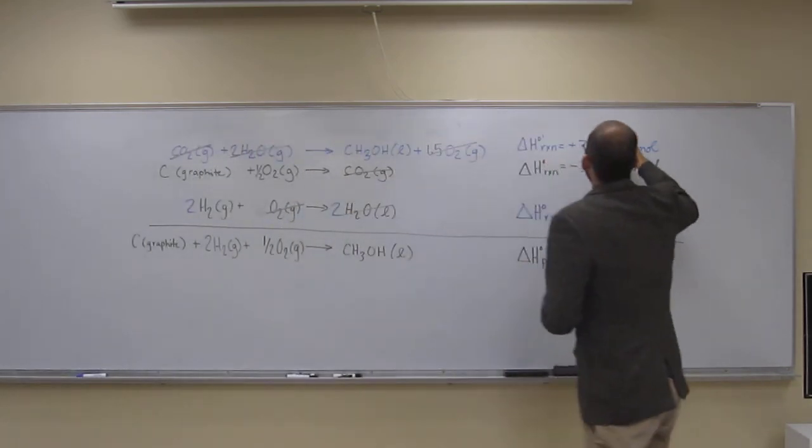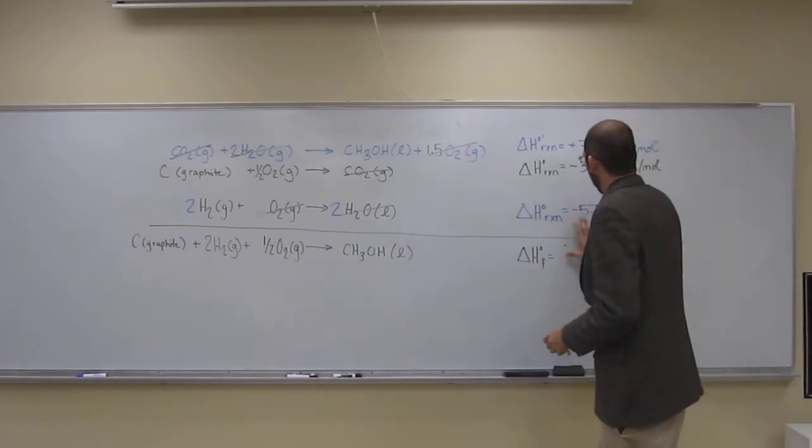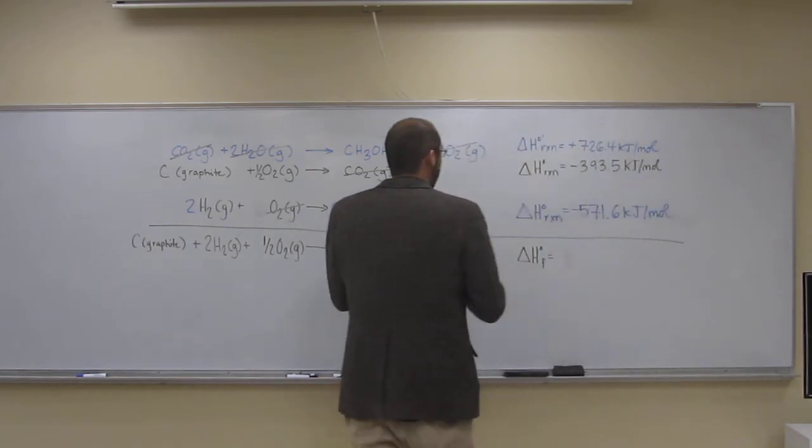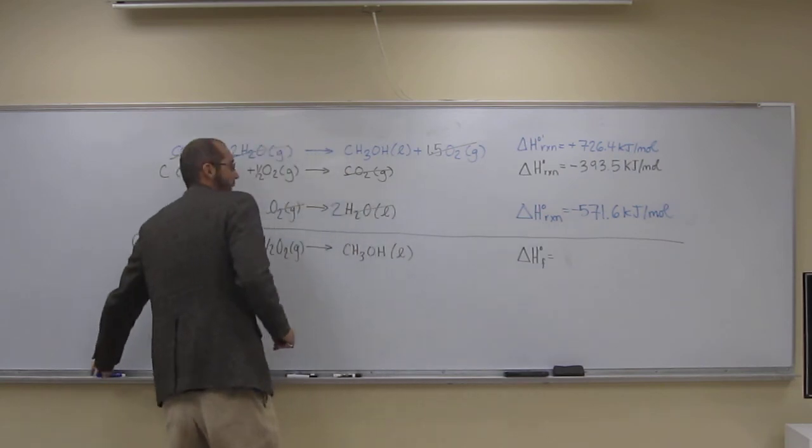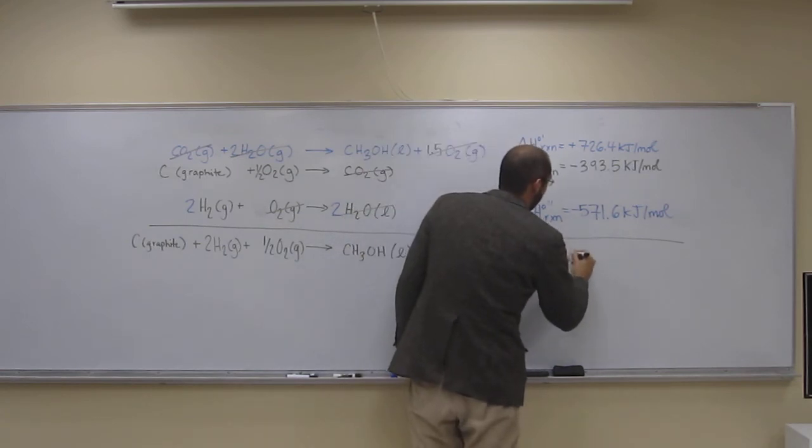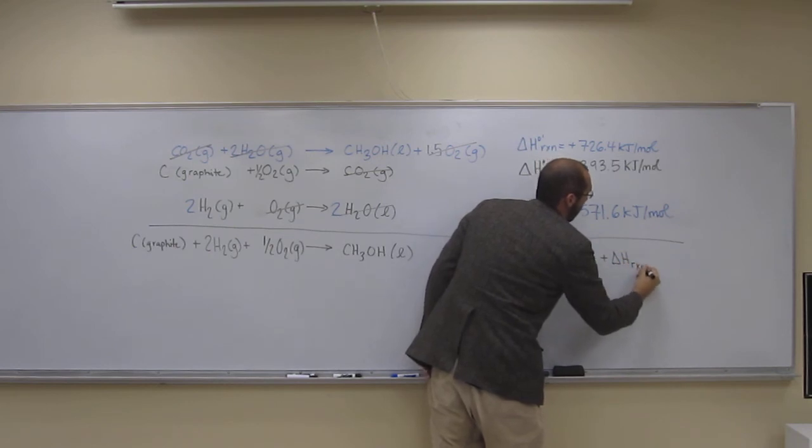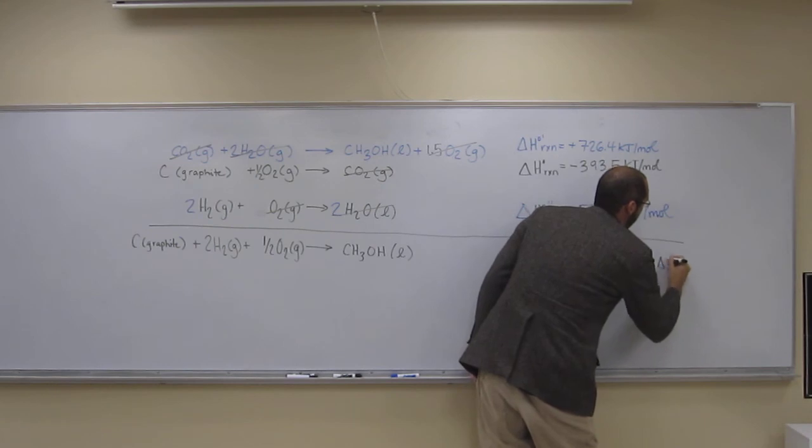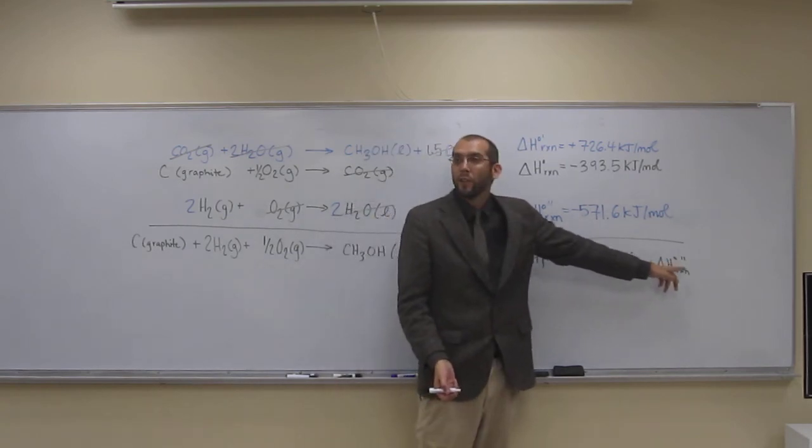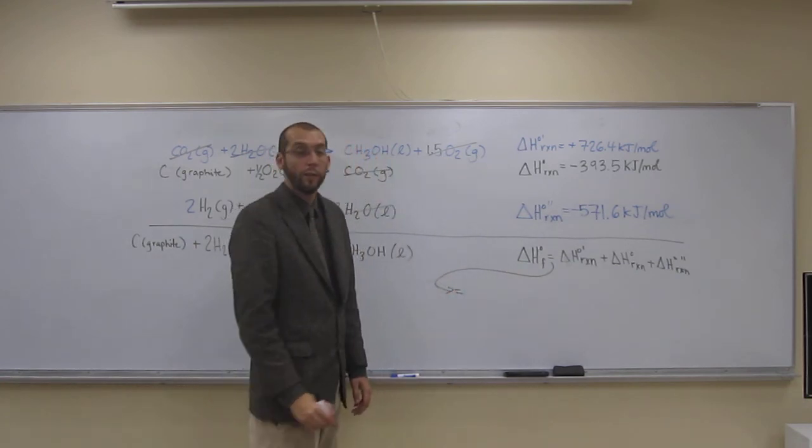So we know that all we have to do is add up these three numbers and that'll give us the heat of formation of this molecule. Let's go ahead and do that. Let's label these. So heat of formation is going to be delta H reaction one, that first one, plus delta H reaction two, plus delta H reaction three. Just plug and chug now.